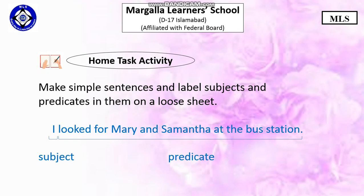So after 'I' we have 'looked,' which is the verb. Starting from the verb 'looked' till the end, including the object, it is going to be included in the predicate. Similarly, make at least five sentences and label them.